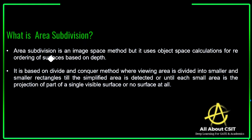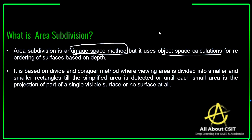First, let us see what is area subdivision. Area subdivision is generally called an image space method. However, it uses object space calculations for reordering of surfaces based on depth — it is trying to reorder the surfaces based on depth variations.